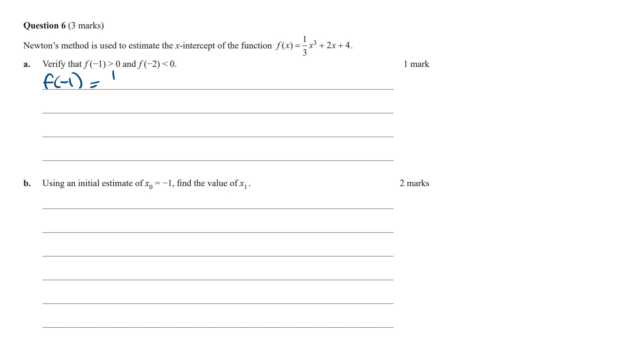f(-1) is going to be 1/3 times (-1)³ plus 2 times (-1) and then plus 4. This is going to be -1/3 minus 2 and then plus 4. This is the same as -1/3 minus 6/3 plus 12/3. And so we've got -1 minus 6 which is -7 plus 12 which is equal to 5, and so this is equal to 5/3.